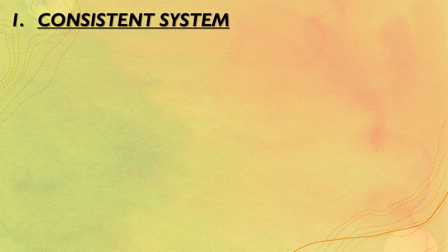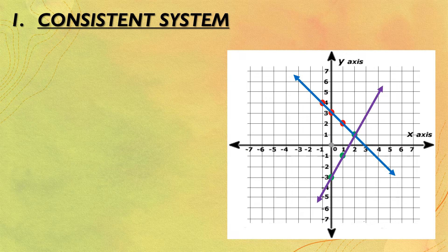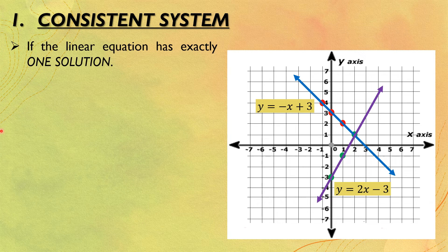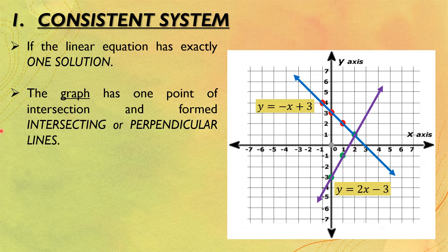First is the consistent system. We have the given graph and the blue line here is for the graph of the equation y equals negative x plus 3, and the violet or purple line is for the equation y equals 2x minus 3. When we say consistent system, it is consistent if the linear equation has exactly one solution. The graph has one point of intersection and forms intersecting or perpendicular lines.